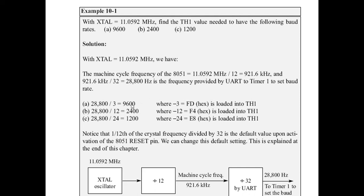Minus 3 is the two's complement of FD hex — you can load either the hexadecimal value or the two's complement value into TH1, both are accepted by the 8051. For 2400 baud, the value F4 hex (or minus 12) is loaded into TH1.